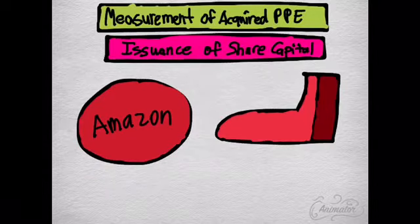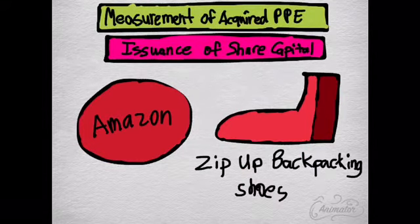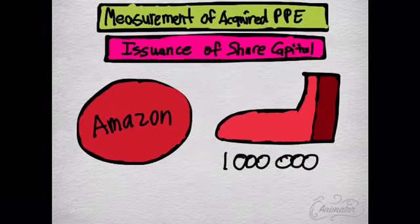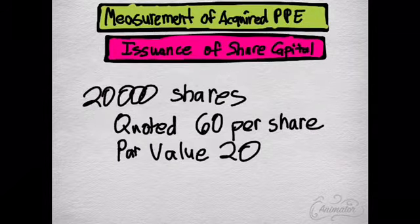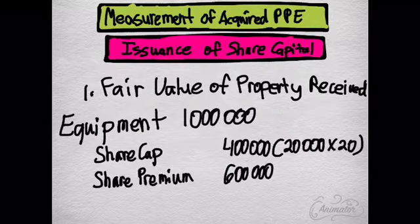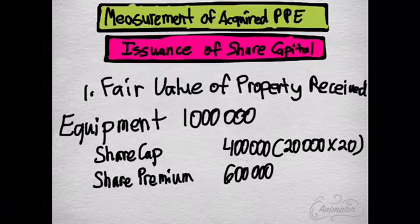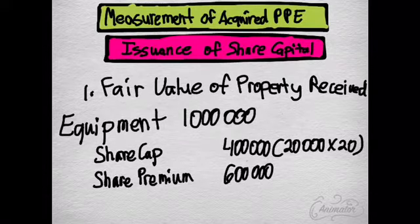Let's say Amazon is trying to sell what they call zip-up backpacking shoes — a product that can be shoes and a bag at the same time — selling it for 1 million. In exchange, you issued 20,000 shares quoted at 60 per share price and par value of 20. Using the fair value of the property received, we would debit equipment for 1 million, credit share capital for 400,000 (shares issued multiplied by par value), and the excess would be credited to share premium of 600,000.